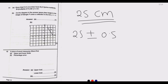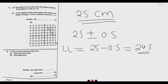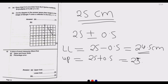The lower limit is the lowest possible value, which is 25 minus 0.5, giving 24.5 centimeters. The upper limit is the highest possible value, which is 25 plus 0.5, giving 25.5 centimeters. So instead of exactly 25 cm, the true measurement could range from 24.5 to 25.5 centimeters. That covers part A.